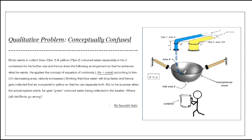So blue water drops down faster and gets collected in the first container. He puts that container aside, and then yellow water drops down and gets collected in the beaker — this is how he separates them. He thinks that by decreasing the area, velocity would increase, so by making a difference in the area of the two pipes blue water will drop down faster and comparatively later yellow water will drop down.